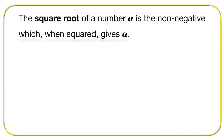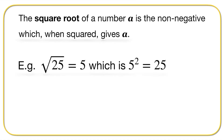Let's look at the first part. The square root of a number A is a non-negative number which, when squared, gives A. For example, the square root of 25 is equal to 5, because 5 squared is equal to 25 — 5 times 5 is 25. The square root of 25 is 5.